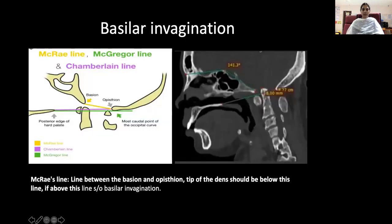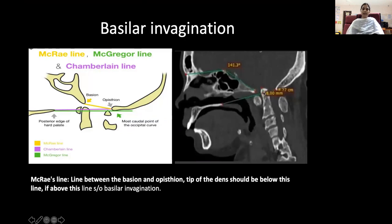Let us see some of the images. The McRae line is a line between the basion and opisthion. The tip of the dens should always be below this line; if it is above this line, it is suggestive of basilar invagination. The sagittal CT image shows the cervical spine is above the McRae line, suggestive of basilar invagination.